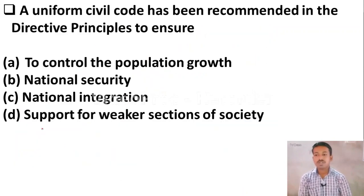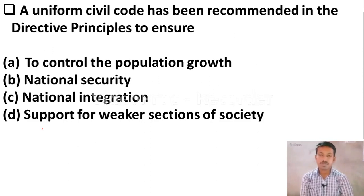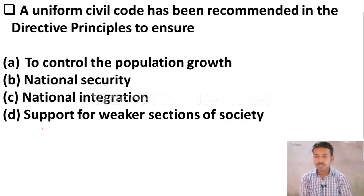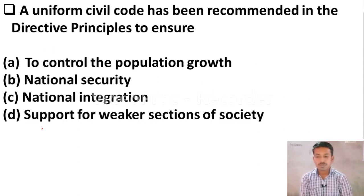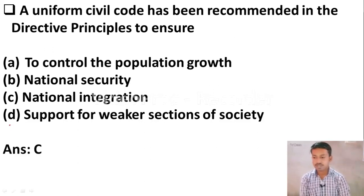Question 1: A uniform civil code has been recommended in the directive principles to ensure — Option A: to control the population growth. Option B: national security. Option C: national integration. Option D: support for weaker sections of society.